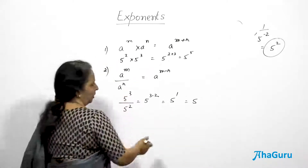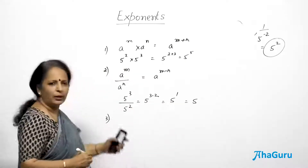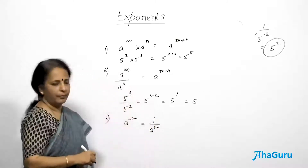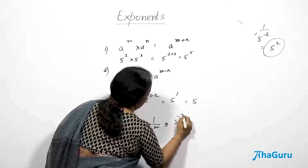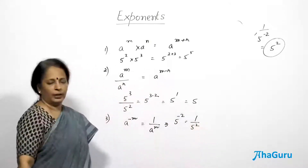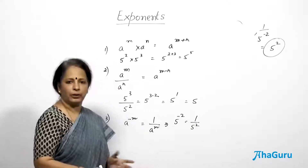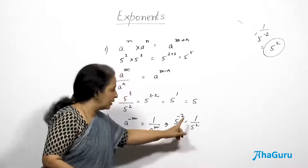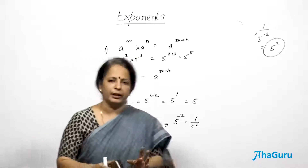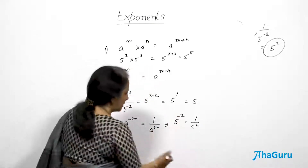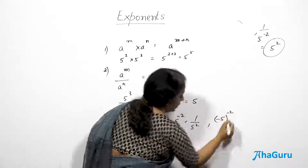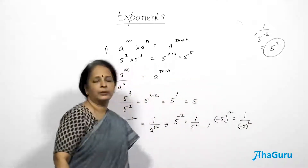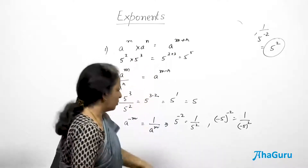The third law: a^(−m) = 1/a^m. So 5^(−2) = 1/5². As long as the power is a negative integer, all you have to do is find the reciprocal. Please remember — when doing the reciprocal, the base continues to remain the same. Do not change the base. For example, (−5)^(−2) = 1/(−5)² — the base stays negative; only the power changes from negative to positive.